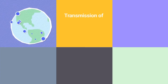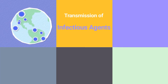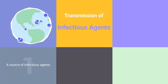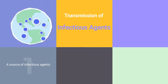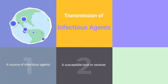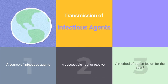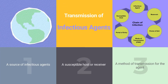Transmission of infectious agents requires three elements: a source of infectious agents, a susceptible host or receiver, and a method of transmission for the agent. This is known as the chain of infection.